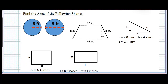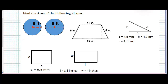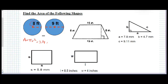The first shape is a circle. Do you remember the rule for the area of a circle? The area of a circle equals pi r squared. We can take pi as 3.14. Here the radius is 8, so we multiply 3.14 by 8 squared.